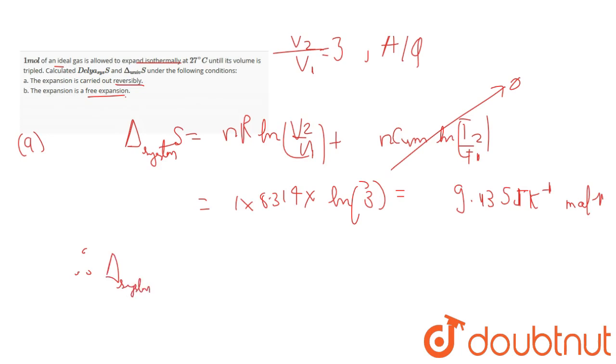Therefore, delta S of system = 9.135 J K⁻¹ mol⁻¹.